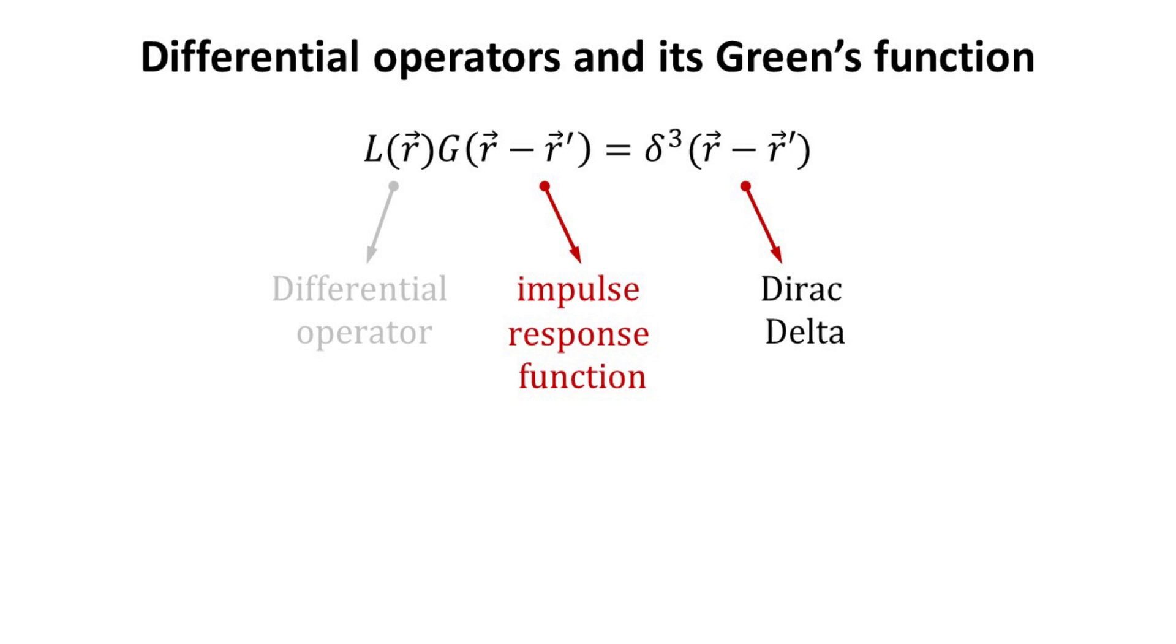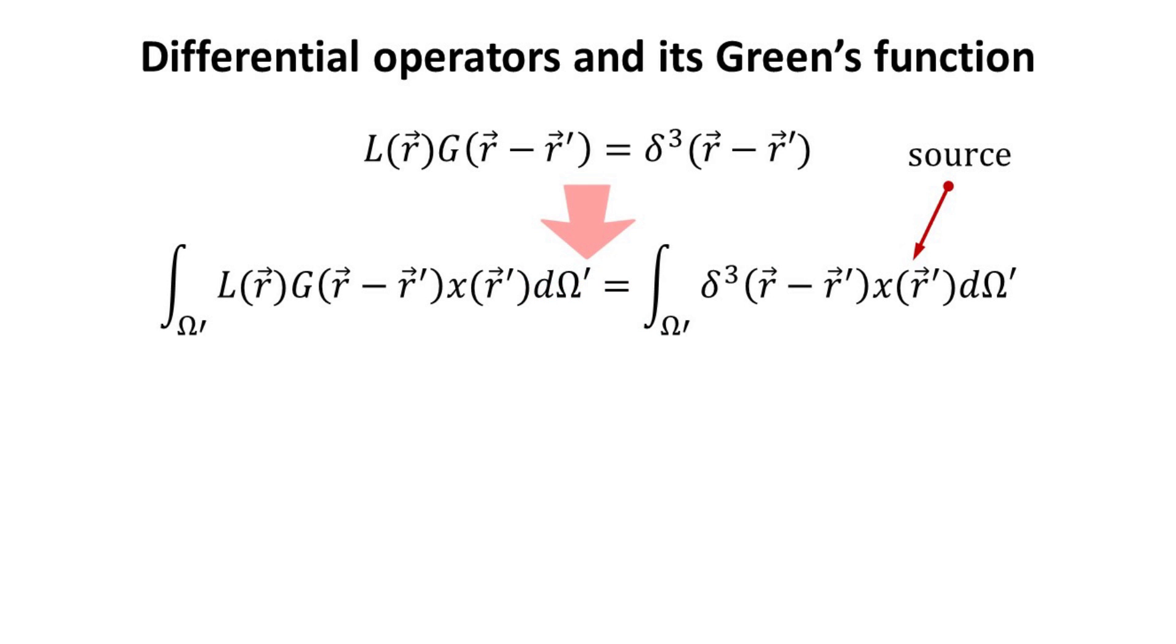The Green's function is also called the impulse response function of the differential operator L. Let's now consider an arbitrary source term given by the function X and convoluted with the Dirac Delta function overall space. The Dirac function in the integrand then picks up the values of X at R. On the left side of the equation, the differential operator L, which acts on R, can be pulled out of the integral.